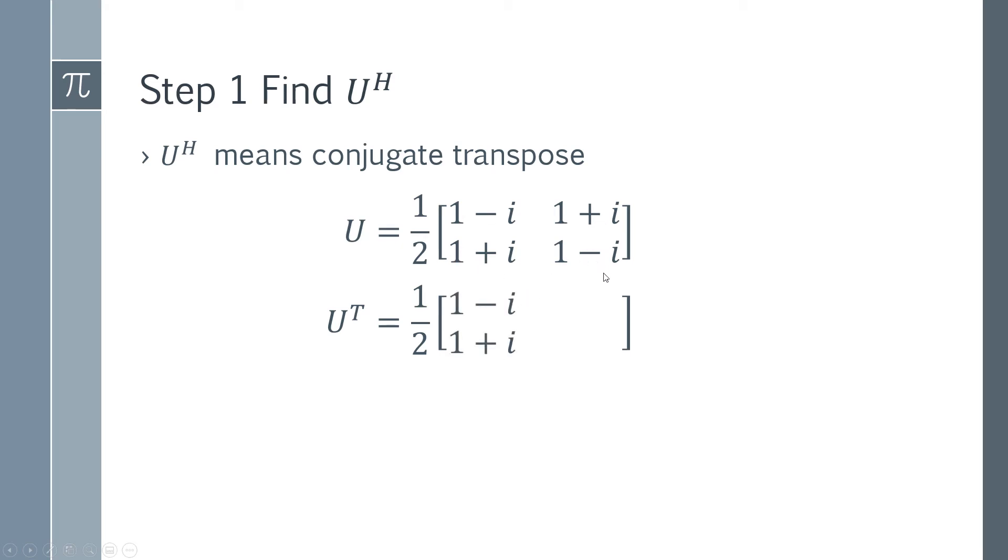So row becomes column, row becomes column. And of course this is a symmetric matrix. So it's perhaps unsurprising that the matrix hasn't in fact really changed.